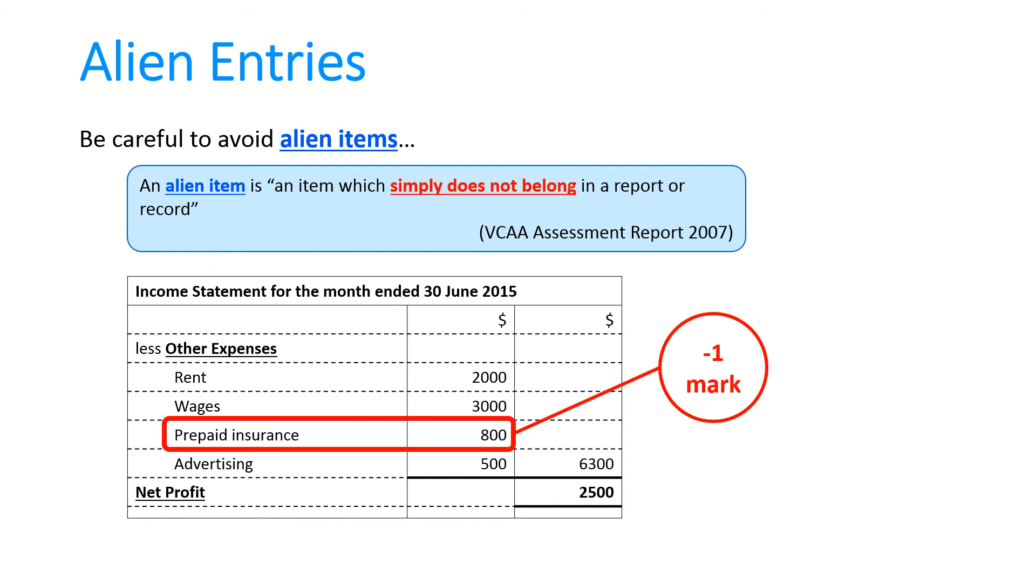So what that's called is an alien item. It does not belong in that report, and if I put it in, I'd lose a mark despite having everything else right in that income statement. Now you only lose usually one mark for the whole report for alien items. So if I had two alien items in that report, I'd only lose one mark for all of them, not one mark for each.